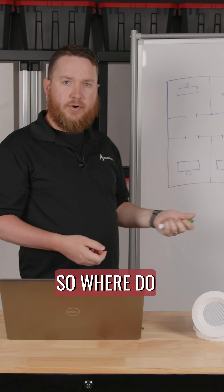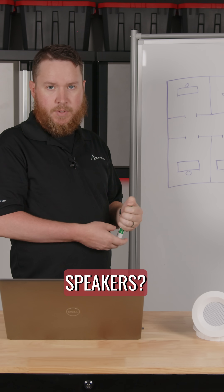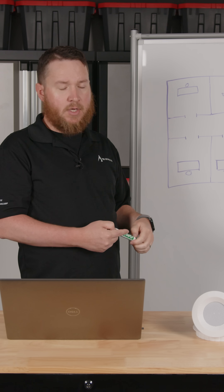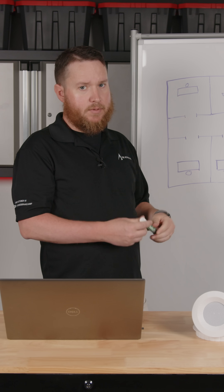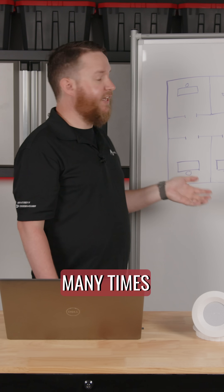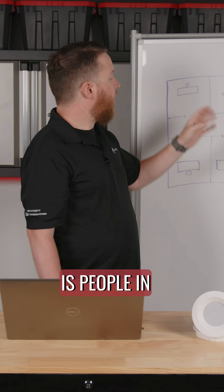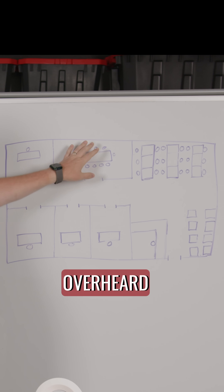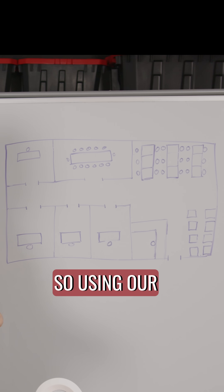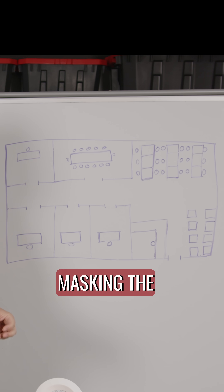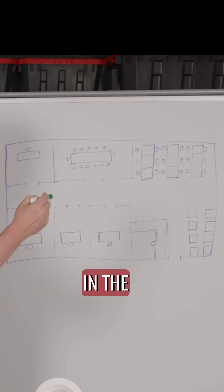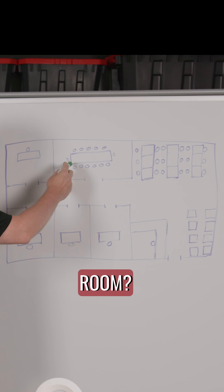So, where do we want to put the speakers? It all kind of starts with what our major problem is. What we hear first many times is people in the conference room can be overheard outside. So, using our rule of masking the listener, we want to put the speakers in the conference room?